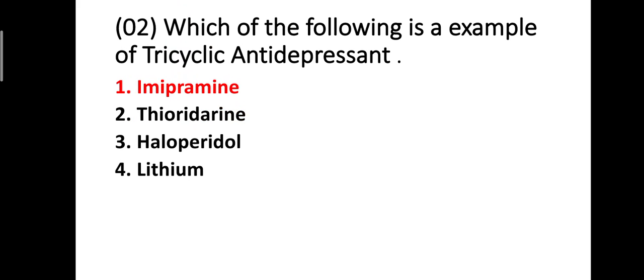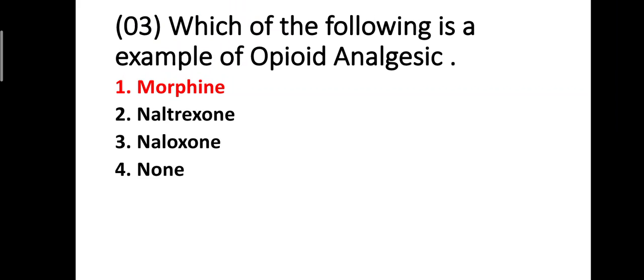Question two: which of the following is an example of a tricyclic antidepressant? Option one: imipramine, option two: thioridazine, option three: haloperidol, option four: lithium. The correct answer is option one — imipramine is a tricyclic antidepressant.